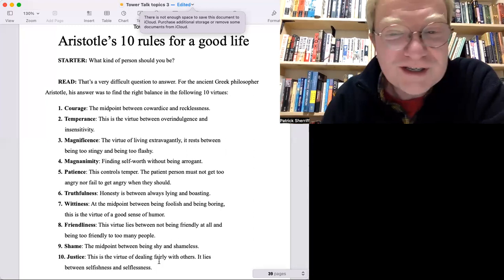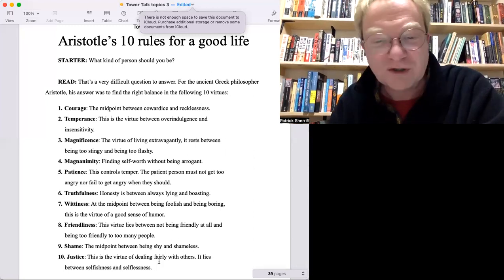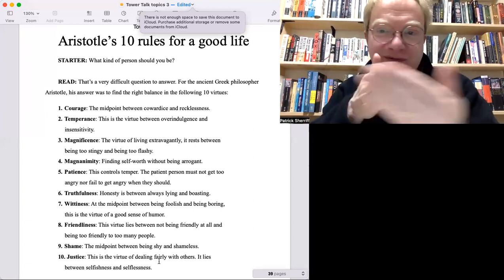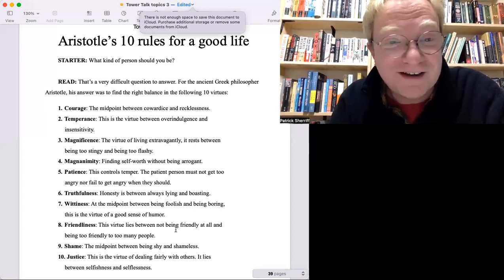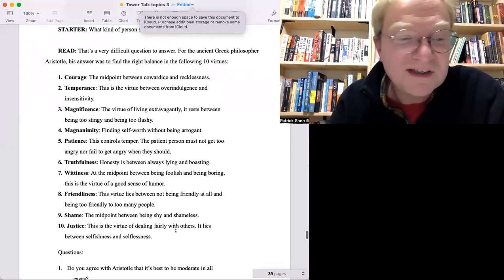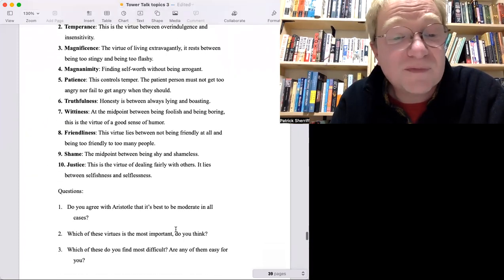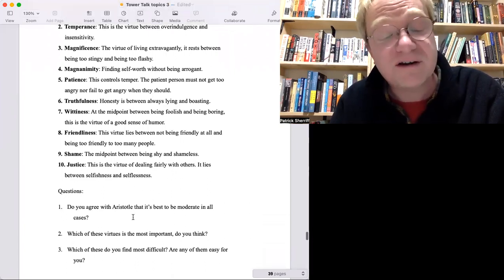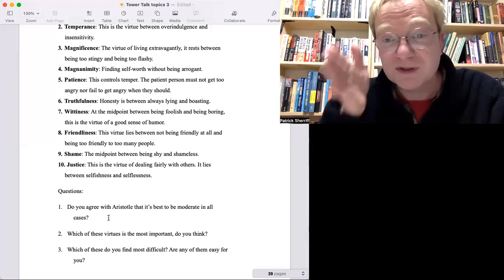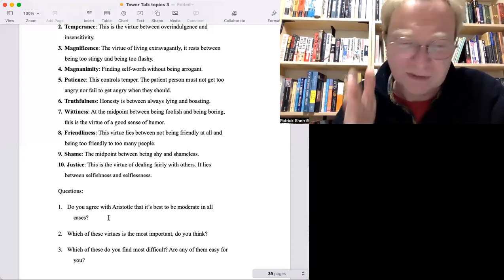Anyway, the point is for Aristotle, he believed everything should be in the middle and there isn't extremes. Interesting. I don't know if we still believe like that, I'm not sure. Here's three questions. Number one: do you agree with Aristotle that it's best to be moderate in all cases? Moderate means in the middle. Is it best to be in the middle?